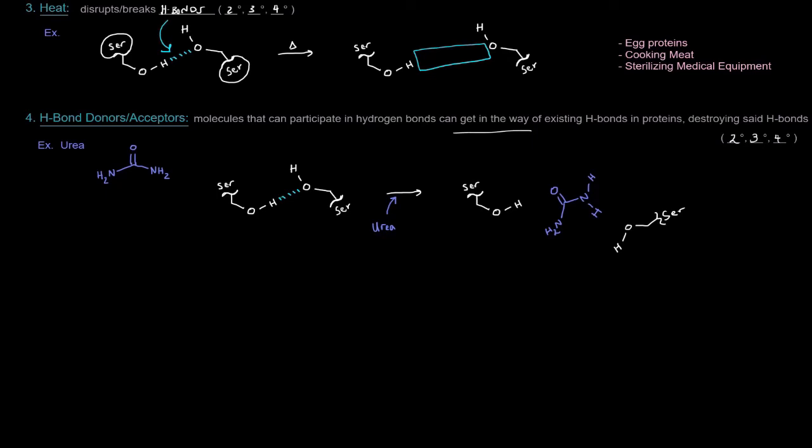One prime example is urea. And urea can hydrogen bond extensively because of its lone pairs on the oxygen up here that can be involved as hydrogen bond acceptors. And the hydrogens on these, attached to the nitrogens here can act as H-bond donors. So, what can happen is they can kind of sneak their way in between existing hydrogen bonds. For example, again, I'm using the example of two serine hydrogen bonding here.